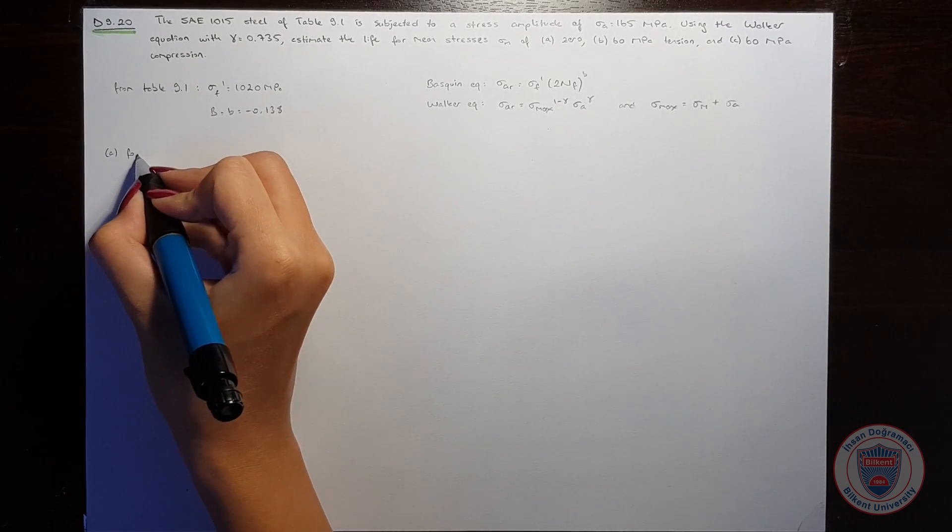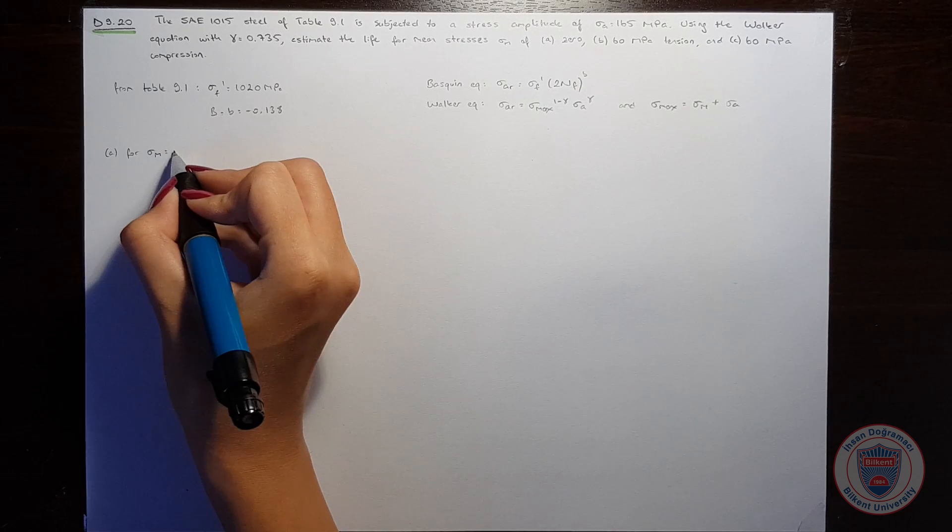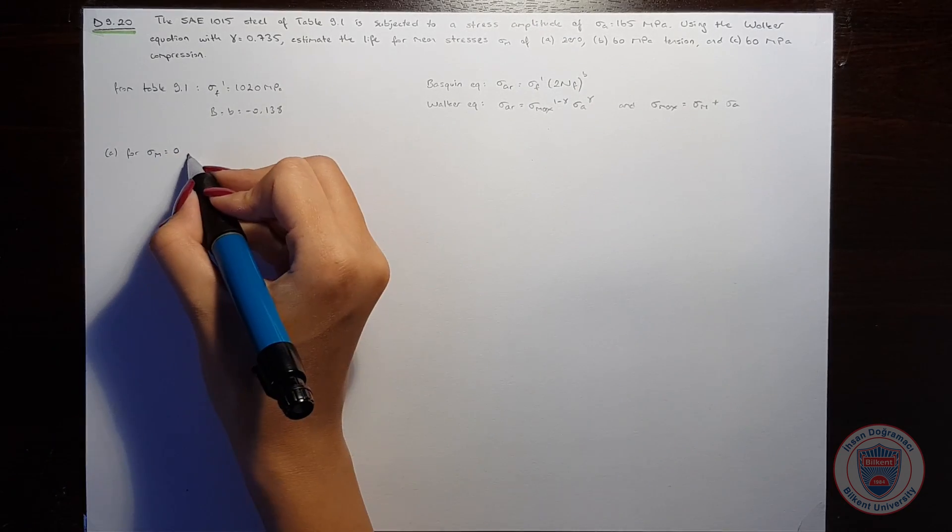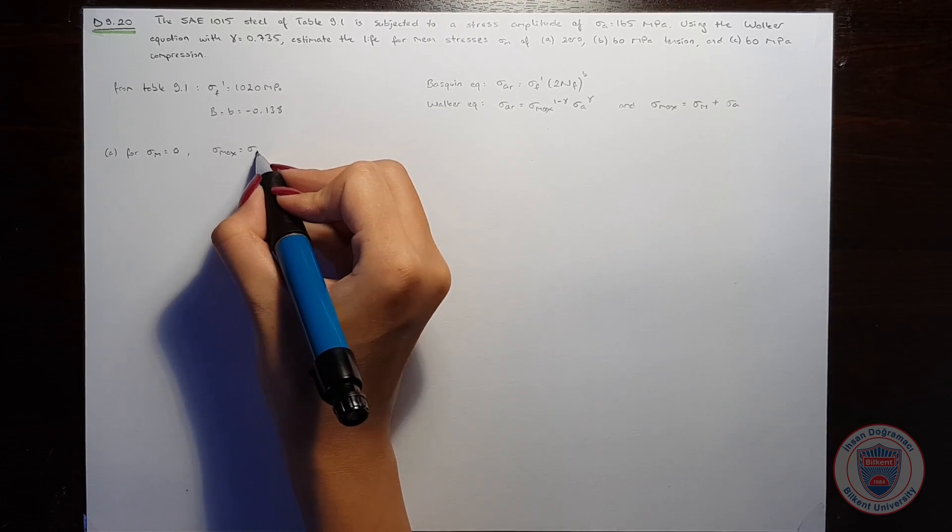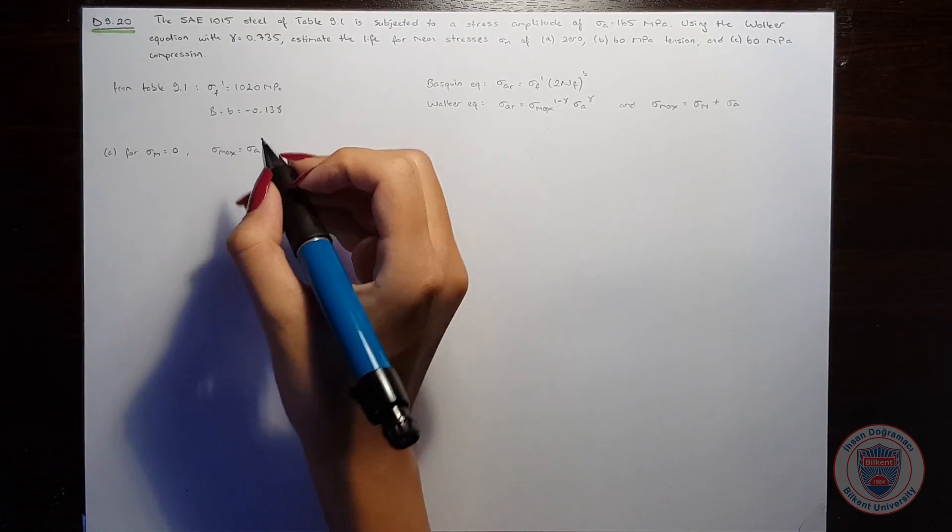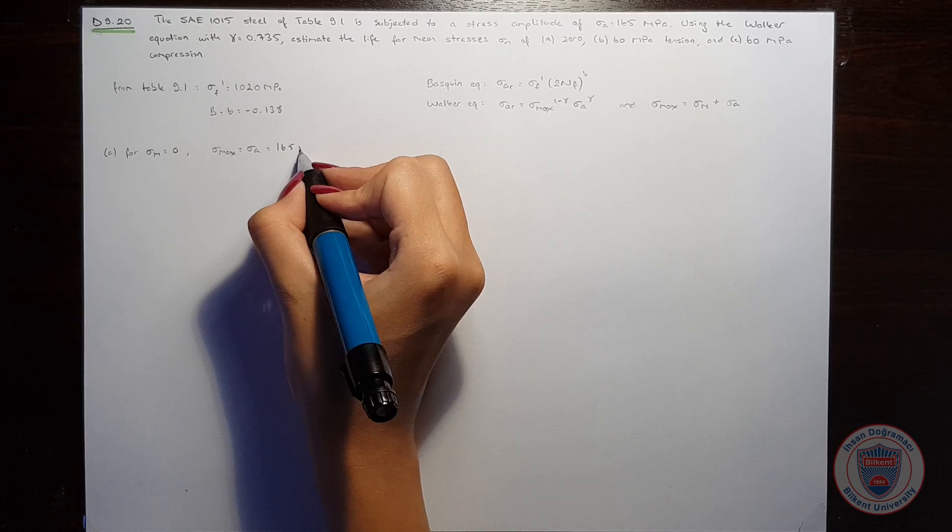In part A, for mean stress equal to 0, sigma max equals sigma A, which is 165 MPa.